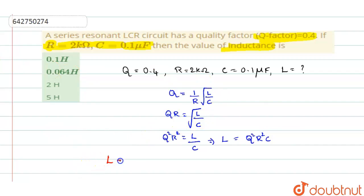So inductance L will be equal to Q is 0.4 square into R. R is 2 kilo ohms, 2 into 10 power 3 square into capacitance is 0.1 into 10 power minus 6.